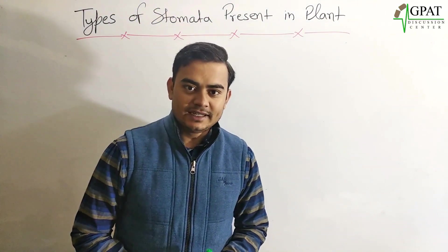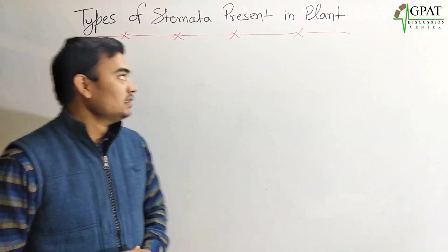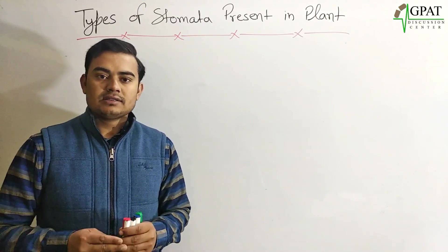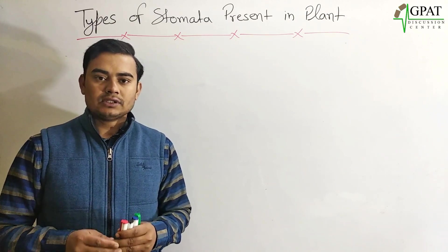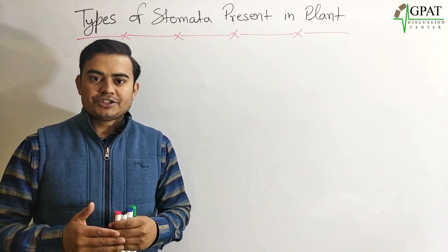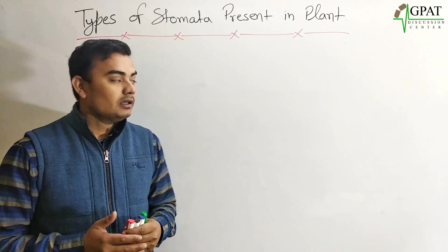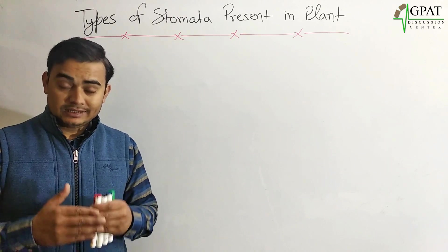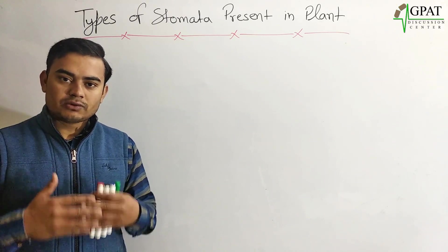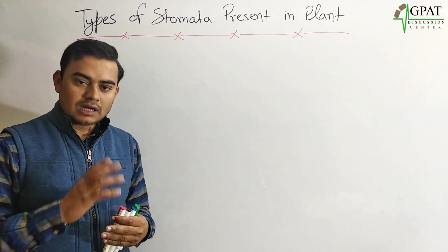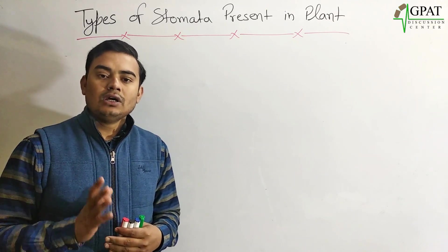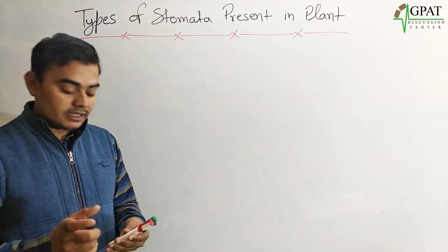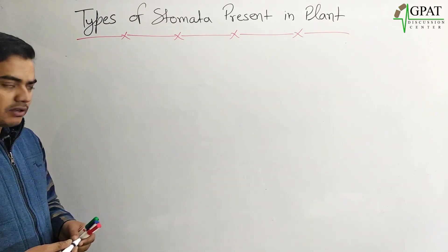Hello friends, welcome back once again. Today I'm going to discuss the types of stomata present in plants. Stomata is the organ responsible for respiration and transpiration in the plant. There are different types of stomata present in plants. This is a very important topic — questions are always asked about which type of stomata is present in a plant, examples of plants for each stomata type, and what happens in each type.